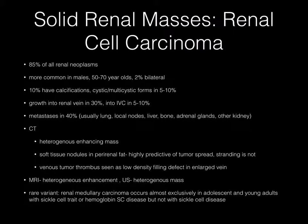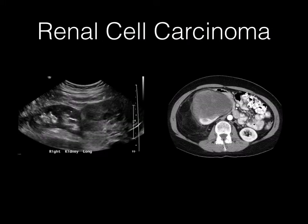Venous tumor thrombus can be seen as low-density filling defects in an enlarged vein. MRI and ultrasound both show a heterogeneous mass. There is a rare variant called renal medullary carcinoma — a popular boards question — as it is almost exclusively seen in adolescent and young adults with sickle cell trait or hemoglobin SC disease, but not with sickle cell disease in the homozygous form.